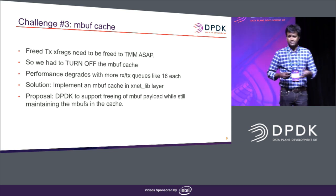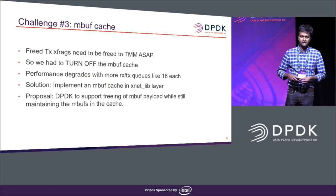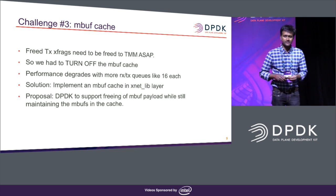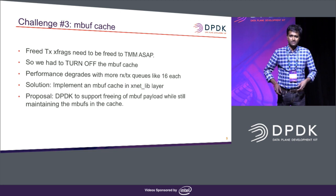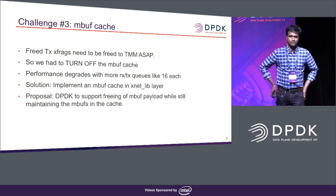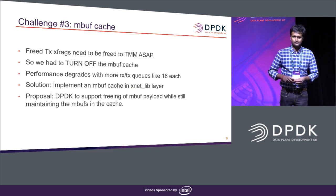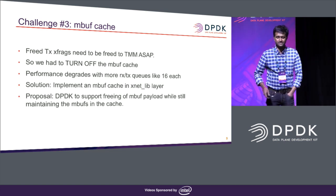So we had to implement a cache very similar to the mbuf cache in the Xnet layer. It's pretty much exactly the same, but it lives in the Xnet layer — it can free the xfrags immediately but retain the mbufs in the mbuf cache. Since there's an experimental implementation for the external mempool handler in 18.05, I'll put forward a proposal: if there's a way for the mbuf cache to free the payload to its memory owner, that would help our case and ease integration.